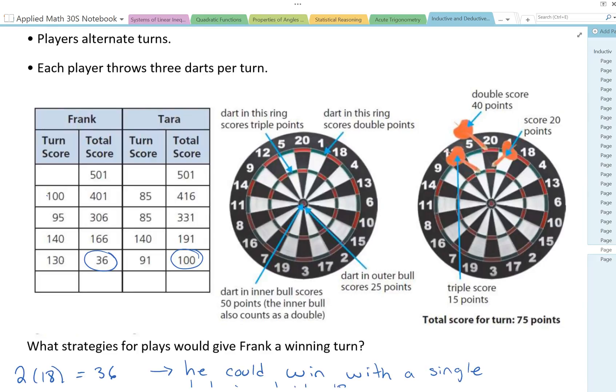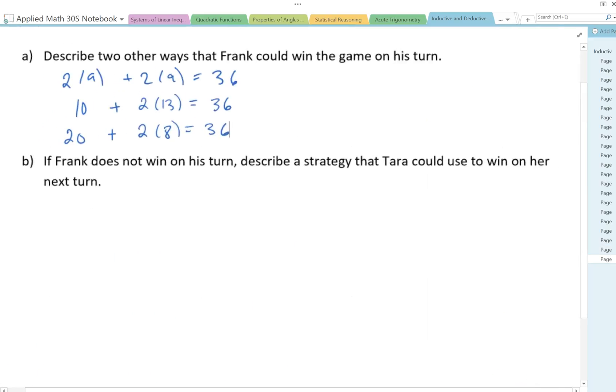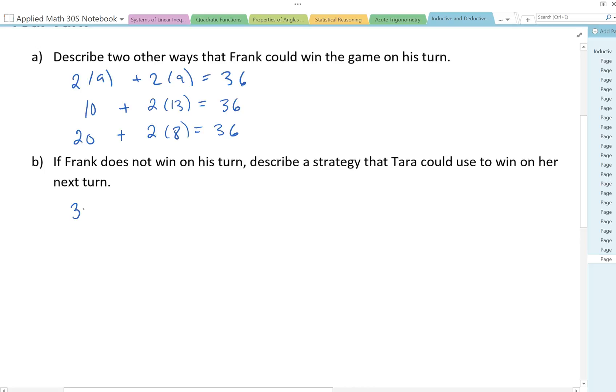Well getting close to 100 there's 20. If she gets a triple on the 20 that would give her 60, and then she would have to get a double on a 20 after that, so that's some good dart throwing if she can do that. Can you think of any other ones?